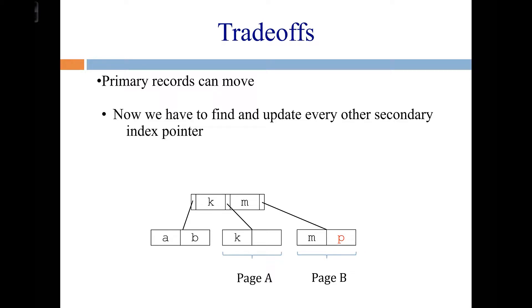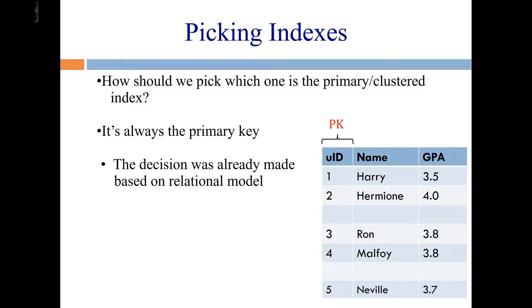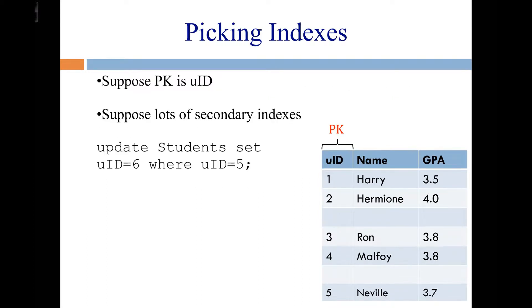So now just to wrap up a few remaining considerations. First, how do you pick which index is the primary index? And this is actually kind of a trick question because you've already decided that by the time you've picked the primary key, because the primary index is always just built on the primary key. So you made that decision more based on the relational model. Let's say you get it wrong, though, so it's maybe better to rephrase this question, how do you pick the primary key?